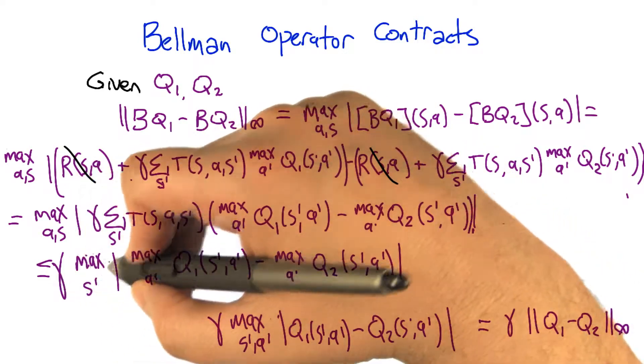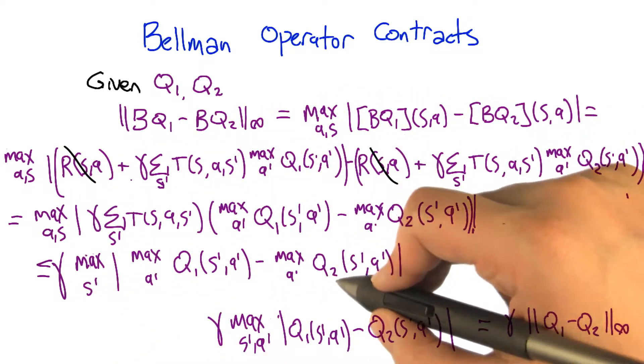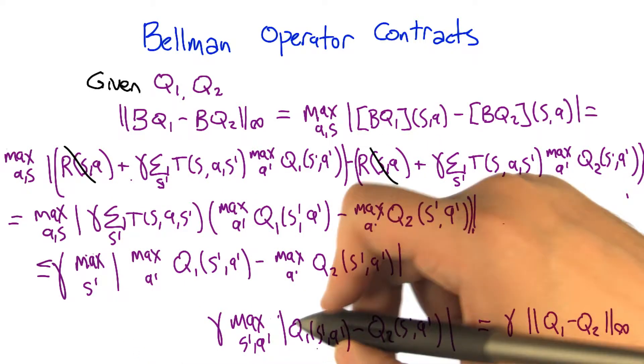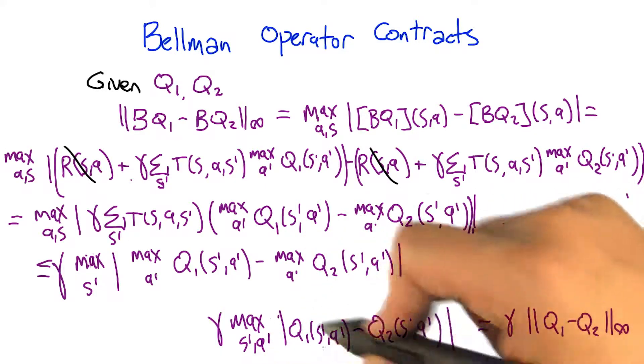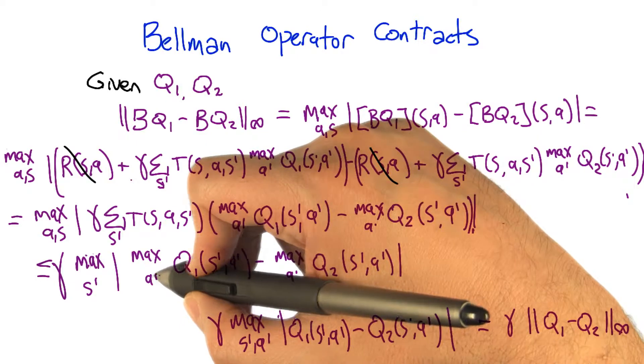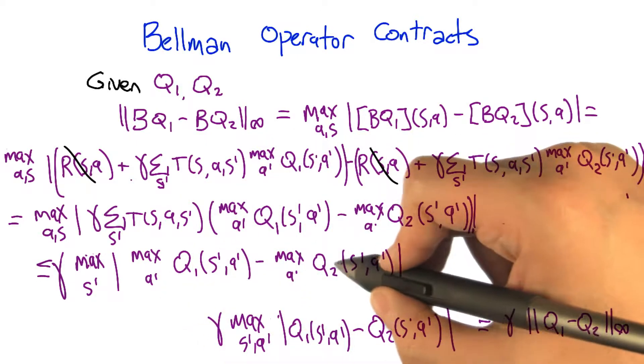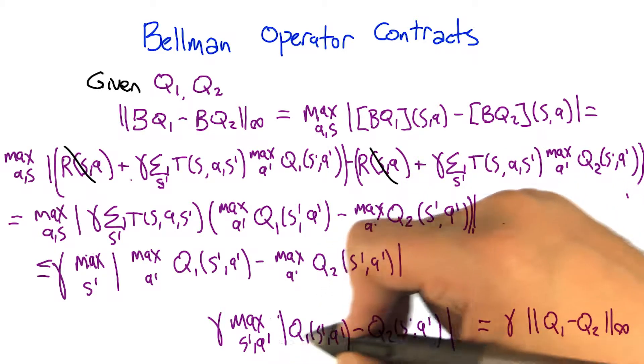It would be really nice if we could move these maxes out of the absolute value and have it this way. So now, the a′s actually match up. Here, this is the max action according to Q function Q₁, and this is the max action according to Q function Q₂. And it would be good if we could just talk about them together.